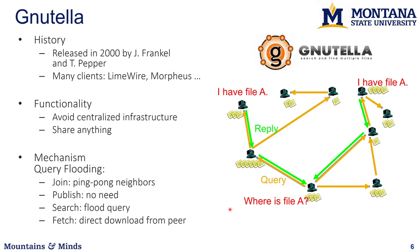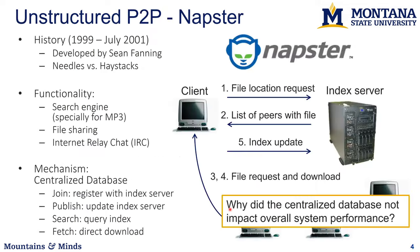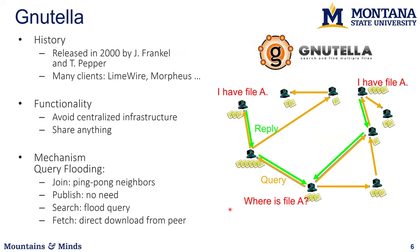After Napster was shut down, people were thinking about how to keep the party going in a fully decentralized way. Napster started around 1999, and then in 2000 people came up with Gnutella, which supported clients like LimeWire, Morpheus, etc. The idea was to provide basically the same service except without a centralized index server. If you needed to find something, you'd send your query throughout the whole network of connected peers.